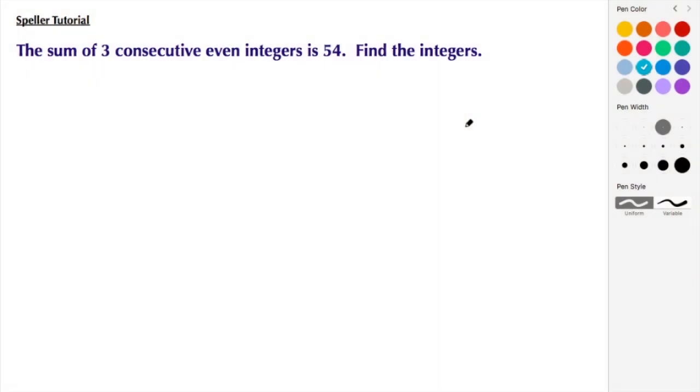In today's tutorial we're going to work on a word problem: the sum of three consecutive even integers is 54, and we need to find those integers. We're going to start by creating three expressions.